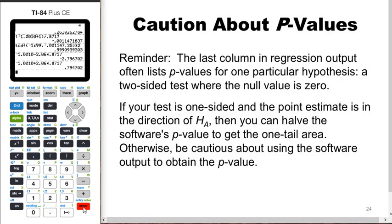A final caution: the last column in regression output often lists p-values for one particular hypothesis — the two-sided test where the null value is zero. If your test is one-sided and the point estimate is in the direction of the alternative, you can cut the p-value in half, as we just did. Otherwise, be very cautious about using the software output directly — you might need to redo it.